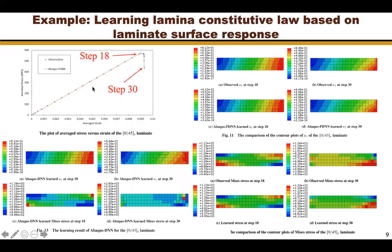Here's the result of the learning. This plot shows the average stress versus the strain at the right surface. From this plot, we can observe that Abaqus-PDNN can learn the global response very well, as the learned and observed curves match each other very well.